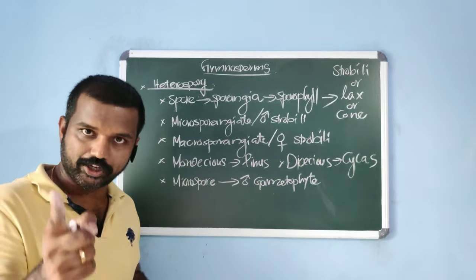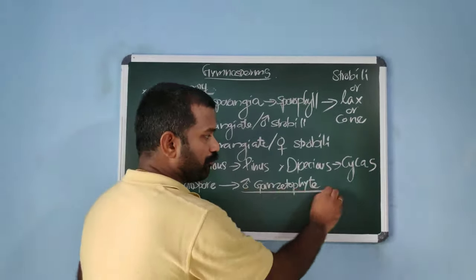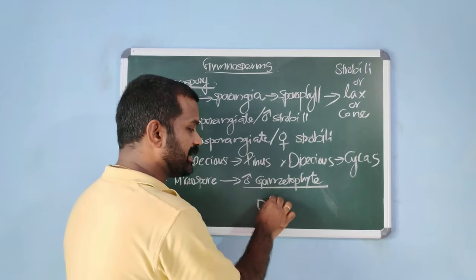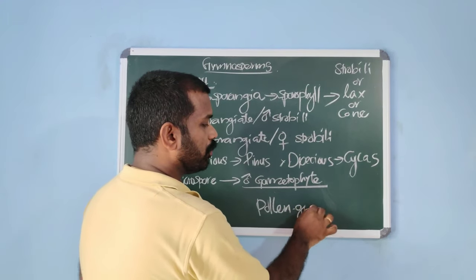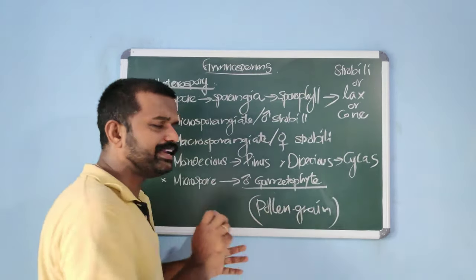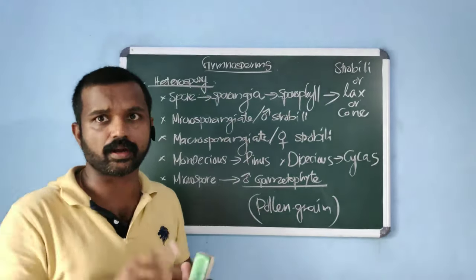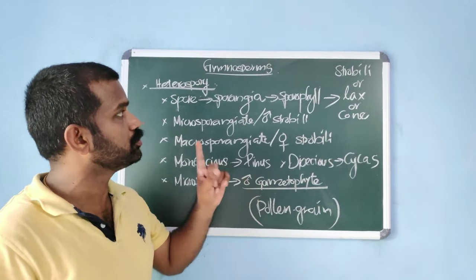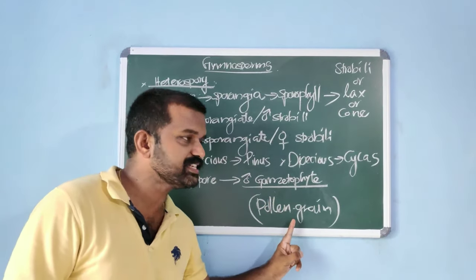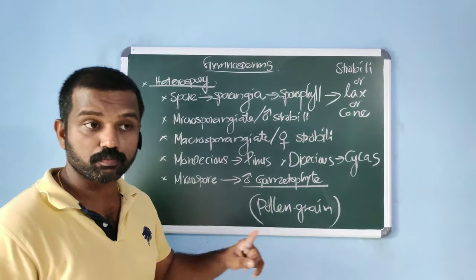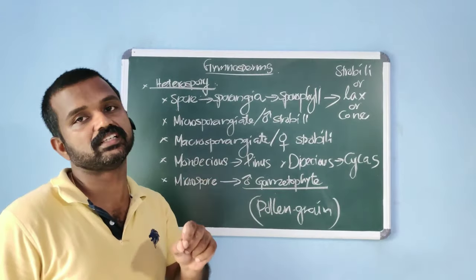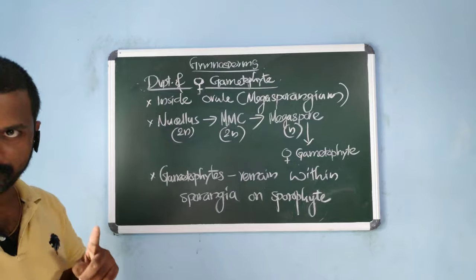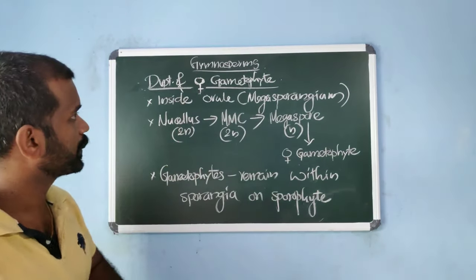The microspore develops to form the male gametophyte. Development of the microspore takes place inside the microsporangia. This male gametophyte in gymnosperms is known as the pollen grain. It is a highly reduced gametophyte compared to previous groups like pteridophytes or bryophytes — multicellular but with a limited number of cells.